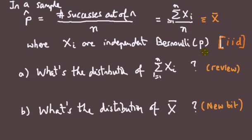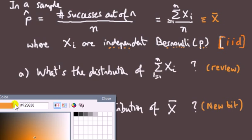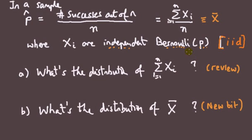To recap: in a sample, the sample proportion p-hat is the number of successes out of n trials divided by n. You can write it as an average, where the x_i's are independent Bernoulli trials — each trial is a success or failure — and they all have the same parameter p, the true probability of success. They are iid: independent and identically distributed Bernoullis with the same parameter p, for i = 1, 2, ..., n.